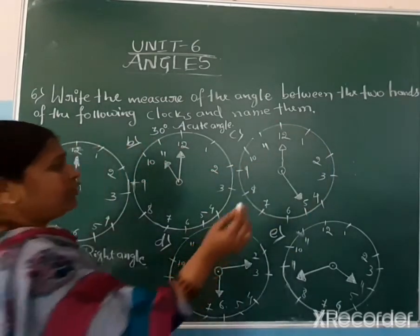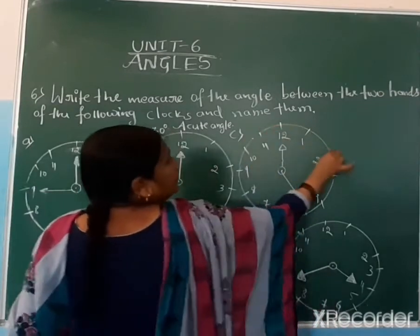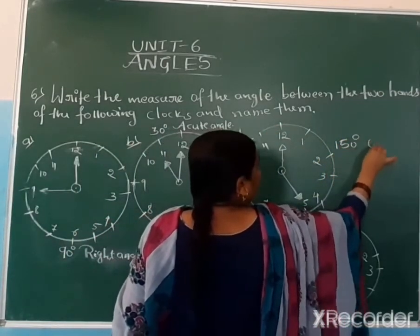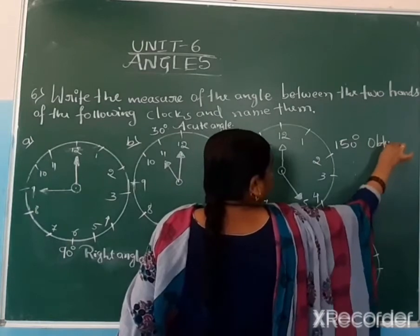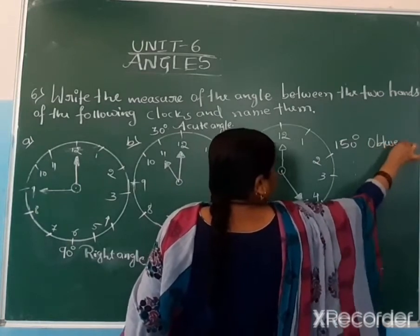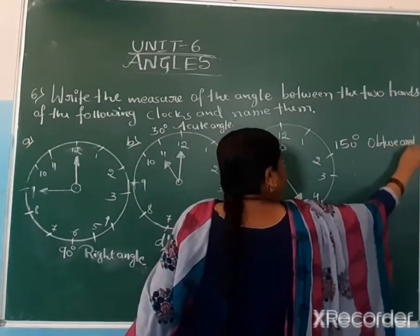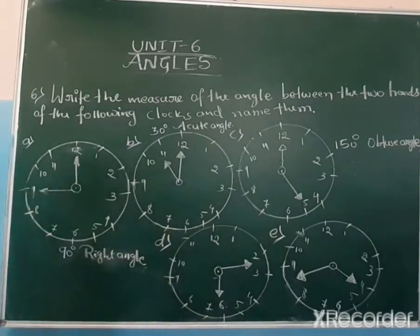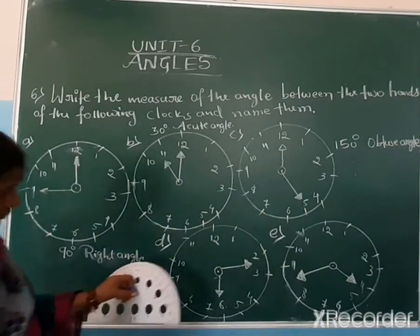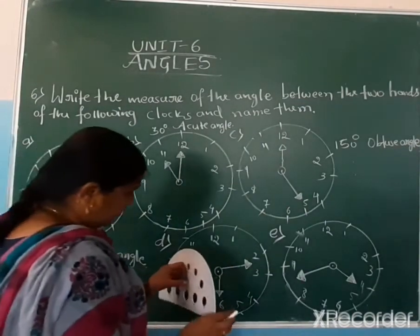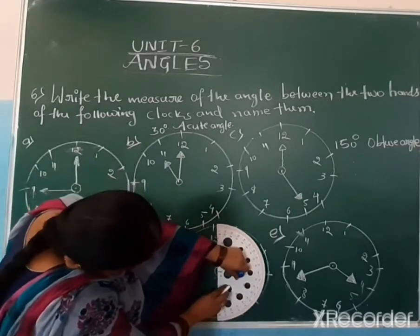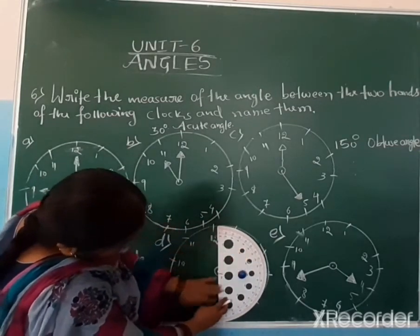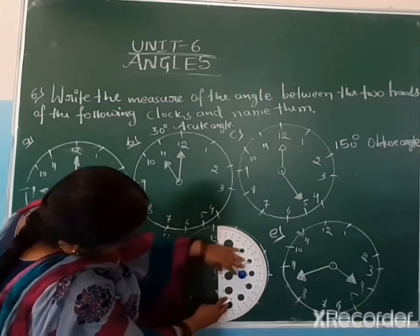What type of angle is this? This is an obtuse angle — above 90 degrees and below 180 degrees. Now for clock D, one of the needles is adjusted to the base, then center point.